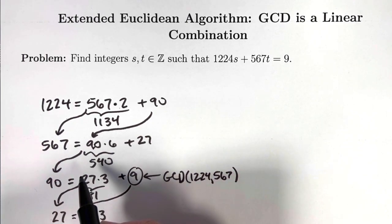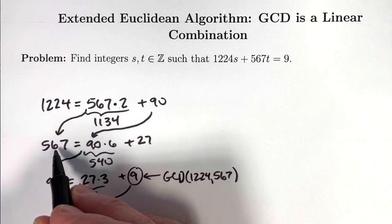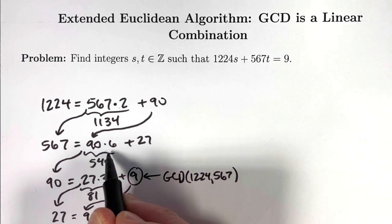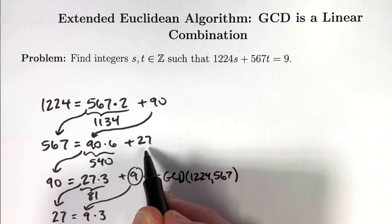The next step in the recursive process of the Euclidean algorithm is to take 567 and now divide by the remainder, 90, to get 90 times 6, the quotient is 6, plus 27. The new remainder is 27.